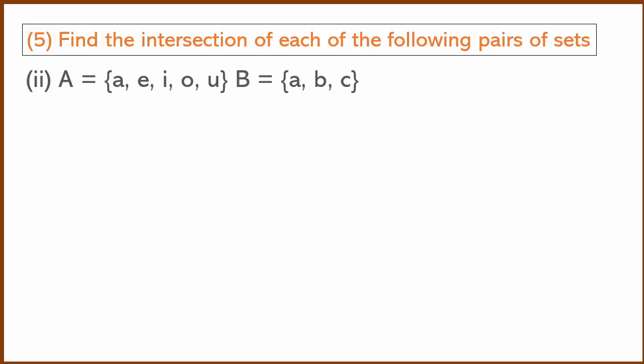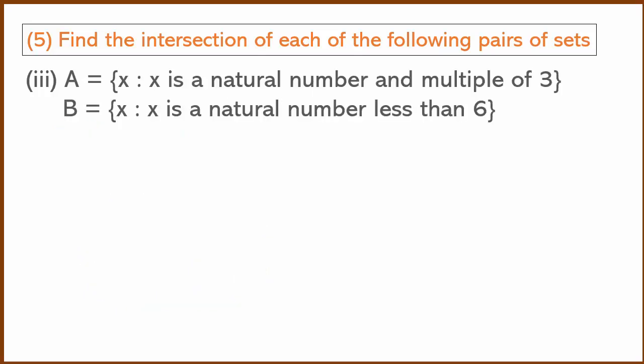Next question: A = {a, e, i, o, u} and B = {a, b, c}. Drawing the Venn diagram, A's elements are the vowels e, i, o, u, a. B's elements are a, b, c. The only common element is 'a'.